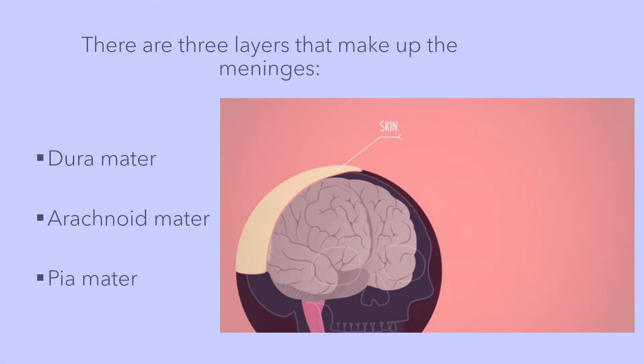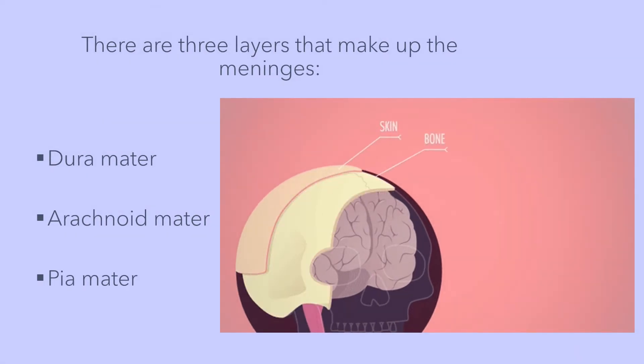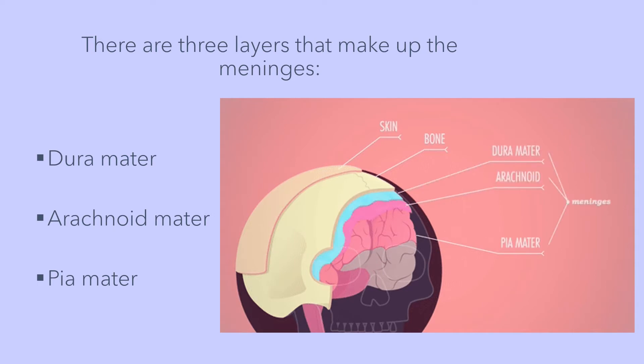There are three layers that make up the meninges: the dura mater, the arachnoid mater, and the pia mater.